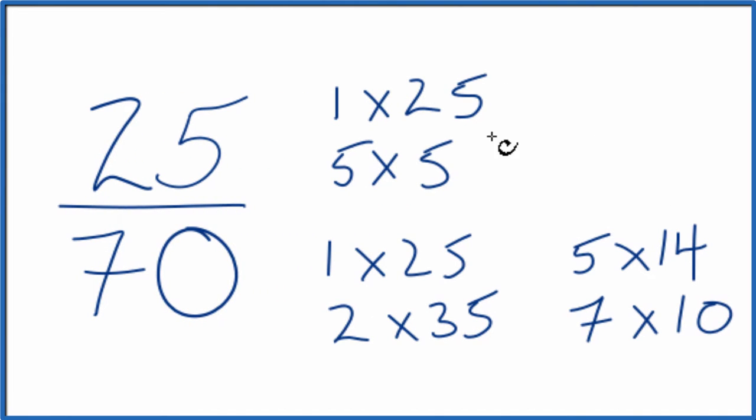So I'm looking for the greatest common factor for 25 here and then we have 70, and it looks like the greatest common factor is going to be 5.